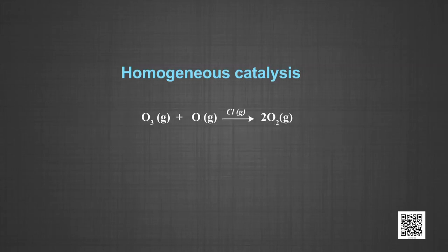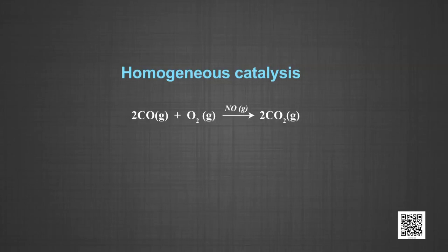Number four: the decomposition of ozone using atomic chlorine as catalyst — ozone and chlorine are in the same gaseous phase. Number five: oxidation of carbon monoxide to carbon dioxide using nitric oxide as a catalyst. Carbon monoxide reacts with dioxygen to give carbon dioxide. Both the reactants and the catalyst are in the same gaseous phase.